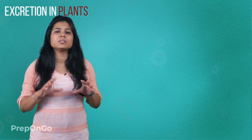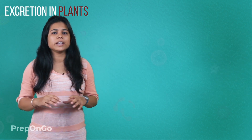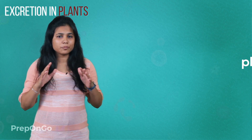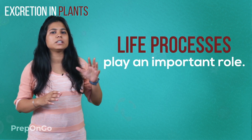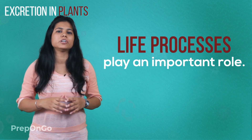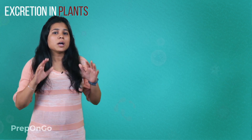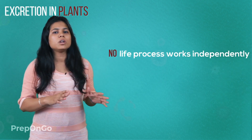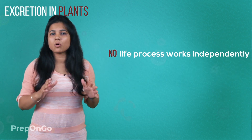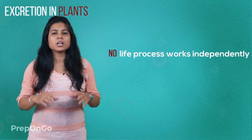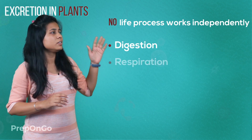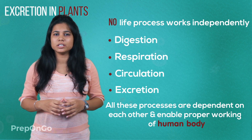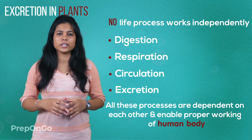We have seen the excretion in plants is simple. This brings us to the end of this chapter. From the beginning till the end, we have seen all the life processes which play an important role in the proper functioning of the human body. No life process works independently — they are all dependent on each other. The processes of digestion, respiration, circulation, and excretion are all dependent on each other and help in the proper working of the human body.